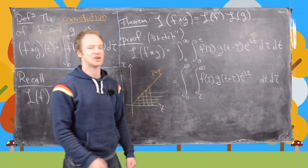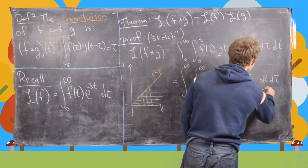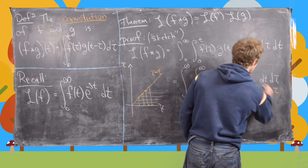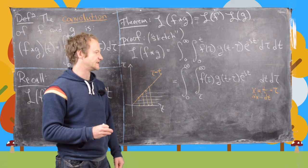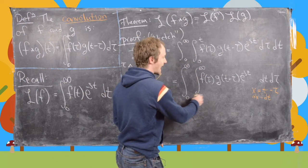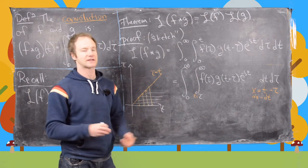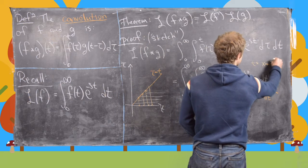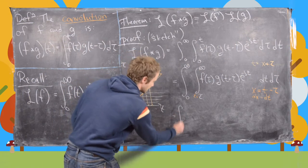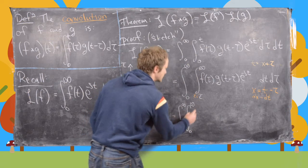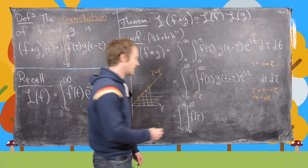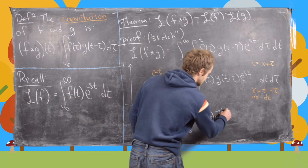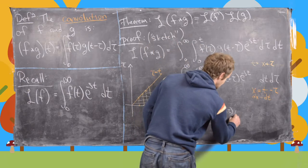Next we make a change of variables: let x equal t minus tau, working on the innermost integral. Notice that dx equals dt, so no sign change is introduced. When t equals tau, x equals zero, and when t equals infinity, x also equals infinity. Finally, t equals x plus tau, so e to the minus st becomes e to the minus s times x plus tau.